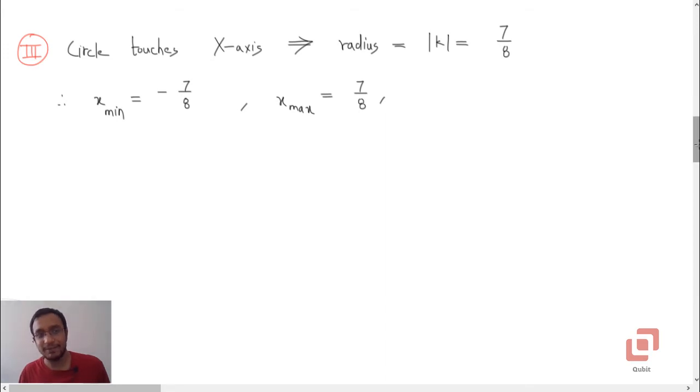We did not need the circum radius, but now of course we will need it. Let's determine the circum radius. Because the circle touches the x-axis, what does it mean? It means that the radius of the circle has to be equal to absolute value of the y-coordinate of the center. Because here y-coordinate is positive, the radius is equal to 7 by 8 itself.